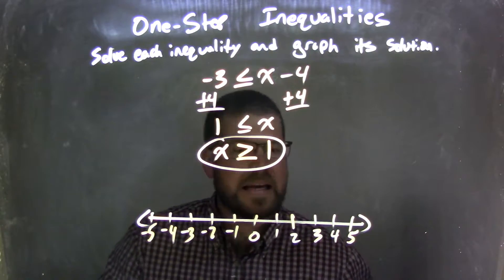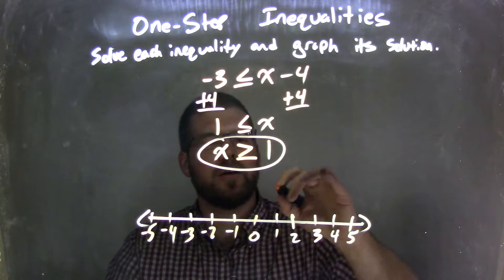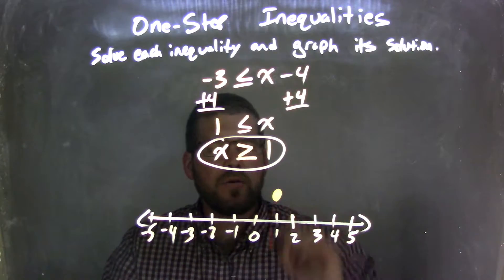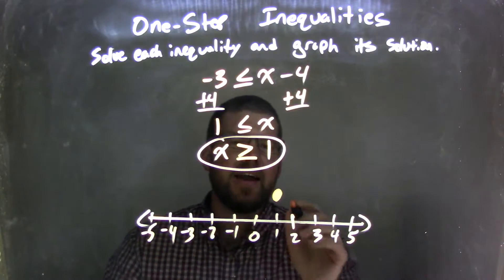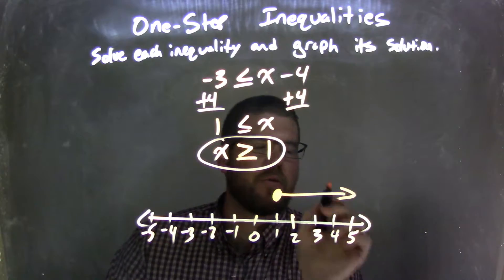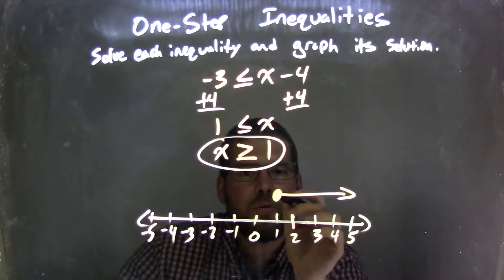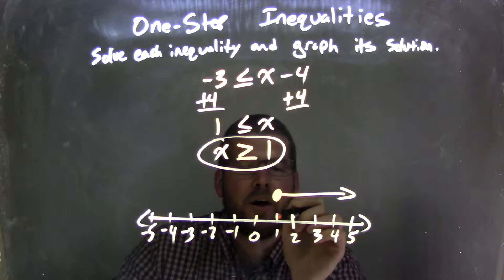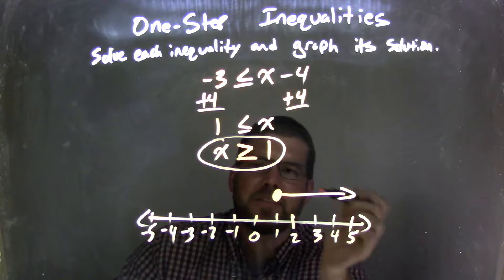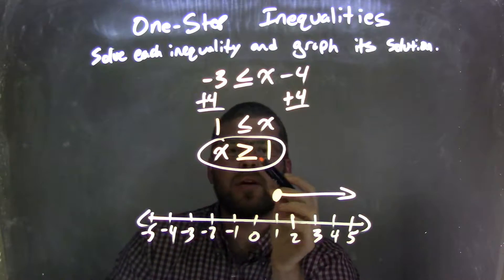Since x is greater than or equal to, and equal to is the key part, which shows it's a closed circle at 1, then x is greater than, so we shade to the right. By shading to the right, we're representing the greater than part, and the closed circle represents the equal to part. So this graph matches our inequality, x ≥ 1.